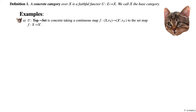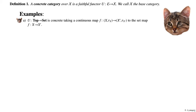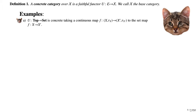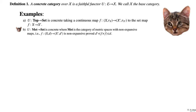The first example is the forgetful functor from the category of topological spaces to Set, which is concrete. It takes continuous maps F: X → X' between topological spaces to the underlying set map F: X → X'. Similarly, we have a forgetful functor from the category of metric spaces with non-expansive maps to Set.